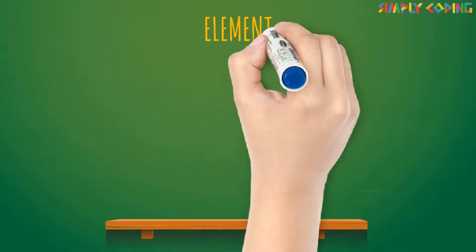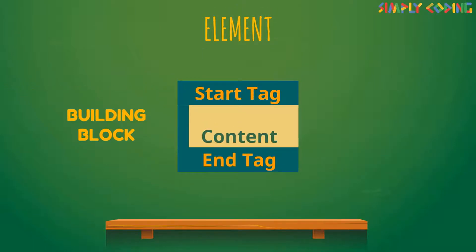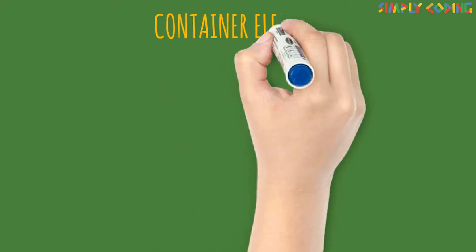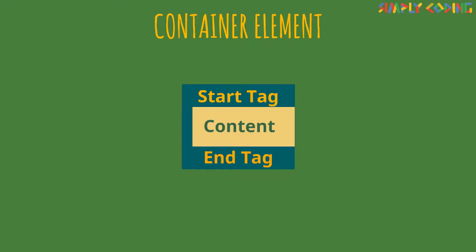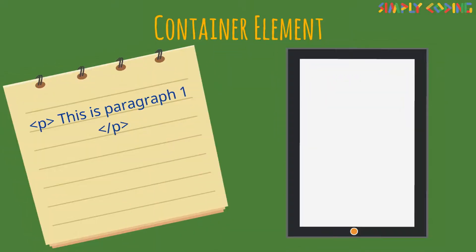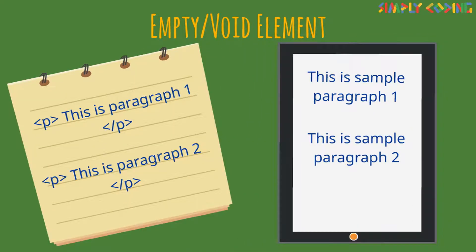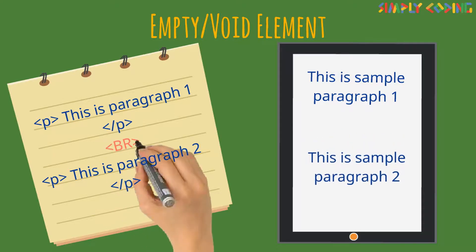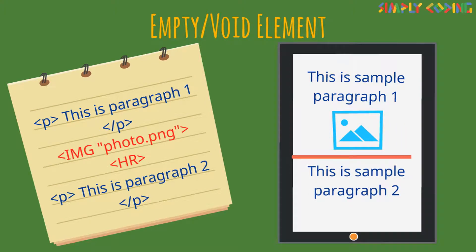Now let's understand what are elements. Elements are the building blocks of an HTML file. Each element has an opening tag, closing tag, and content in between. Elements are of two types. First are container elements — these are the ones which have tags in pairs: a starting and a closing tag. Example: the paragraph tag. Second is the empty or void element — they require only the starting tag. Examples include the tag to break a paragraph, the tag to insert an image, or a horizontal line.